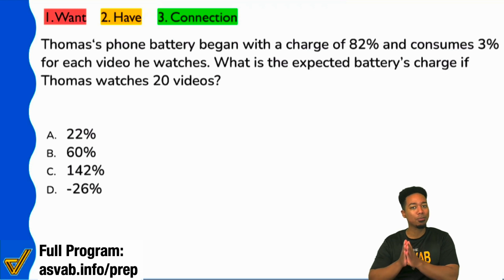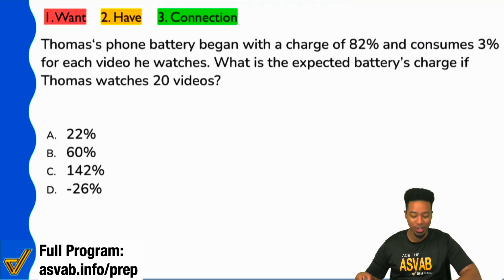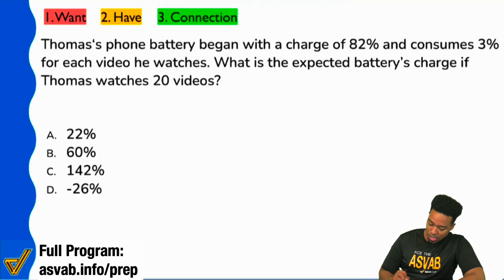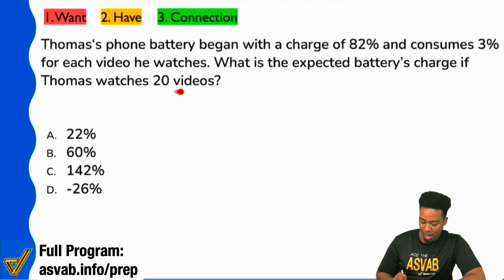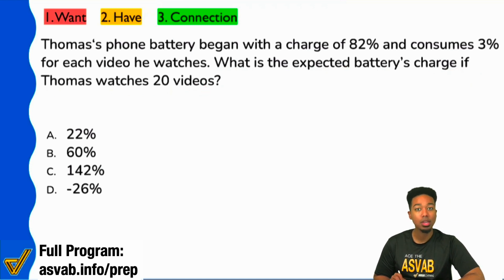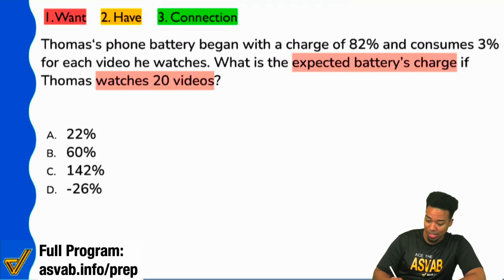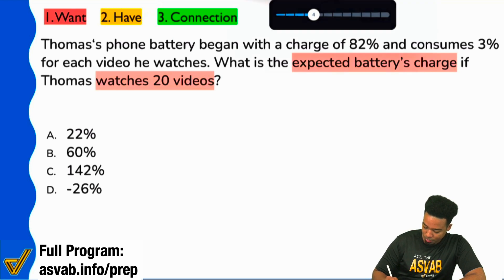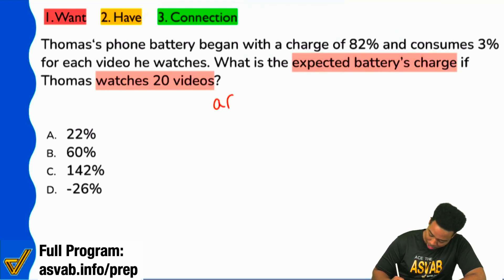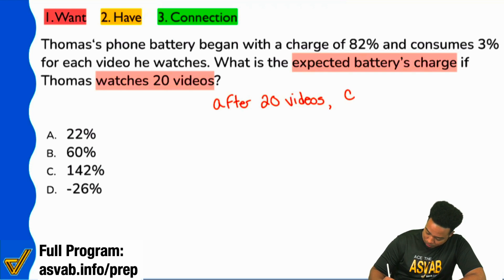So let me start to finish show you what's going on. We see: what is the expected battery's charge when Thomas watches 20 videos? What we're saying is we want to know the battery's charge after 20 videos. I would write it like this: after 20 videos, the charge equals blank percent.